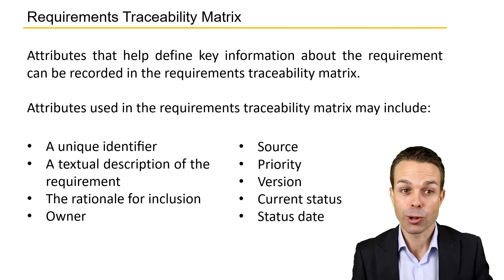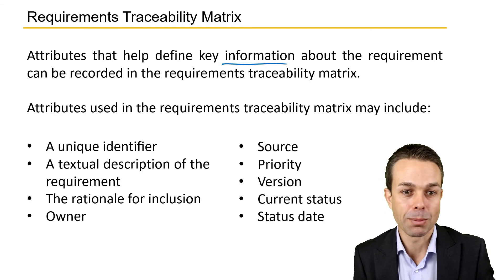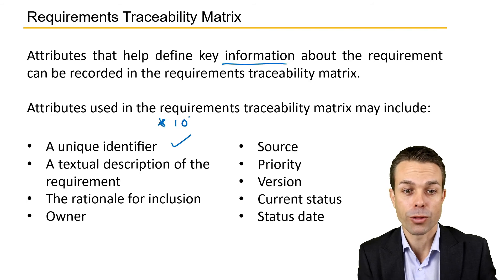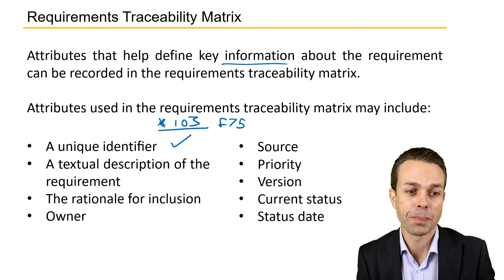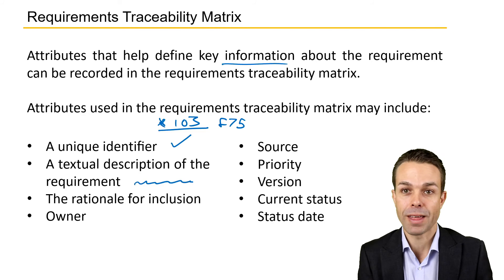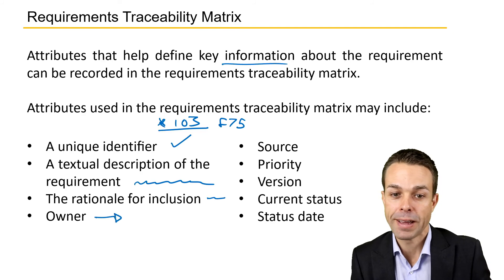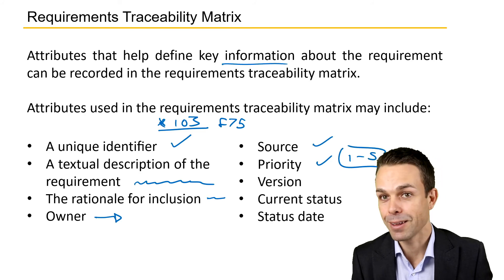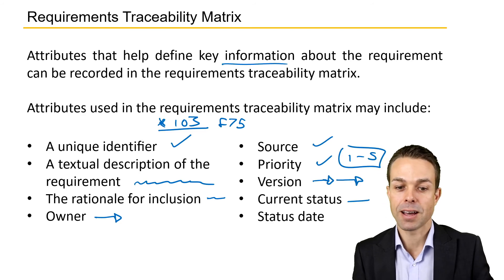There are a few attributes we'll put into this Requirements Traceability Matrix that will help define key information about those requirements. These attributes include a unique identifier — for example, number 103 or F75, whatever makes sense for the project. A textual description of that particular requirement, the rationale for its inclusion, who owns that requirement and where it came from, the priority — one to five is usually a good measure — the version of that requirement or deliverable, and the current status and status date.